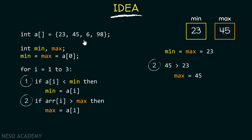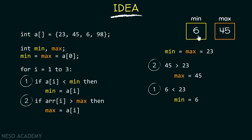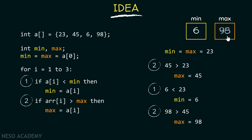Now let's compare the next element. Since 6 is less than 23, the new minimum element is 6, not 23, so we replace 23 with 6. In the third iteration of the for loop, we compare 98 with the new minimum and maximum. 98 is not less than 6, but 98 is greater than 45, so the new maximum element is 98, and we replace 45 with 98.